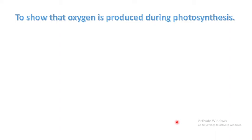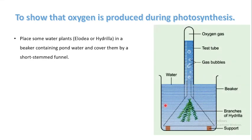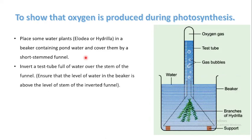Now let us see an experiment to show that oxygen is produced during photosynthesis. Place water plants like Hydrilla or Elodea in a beaker containing pond water — not distilled or RO water — and cover them with a short-stemmed funnel. Then take a test tube completely filled with water and invert it over the stem of the funnel. Ensure the water level in the beaker is above the stem of the inverted funnel.